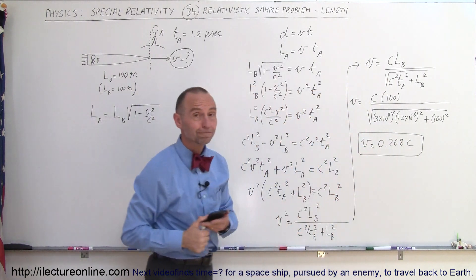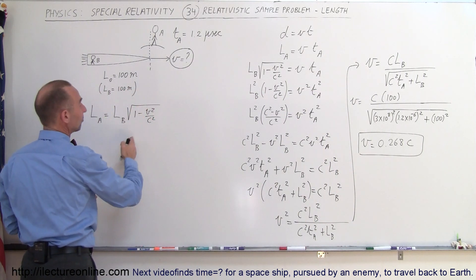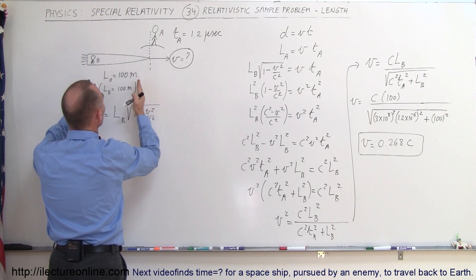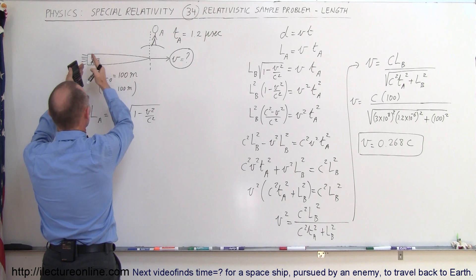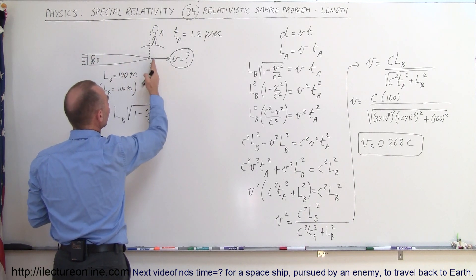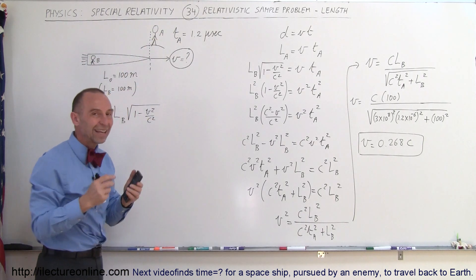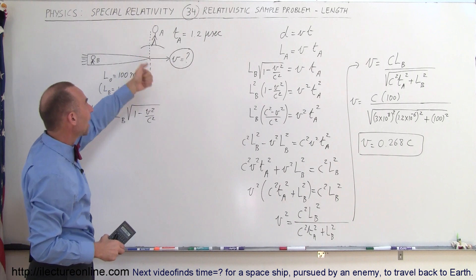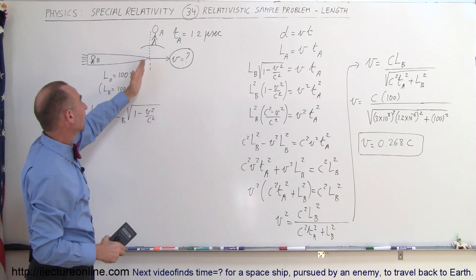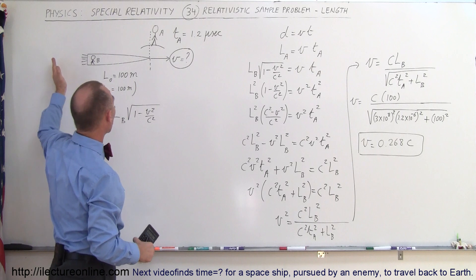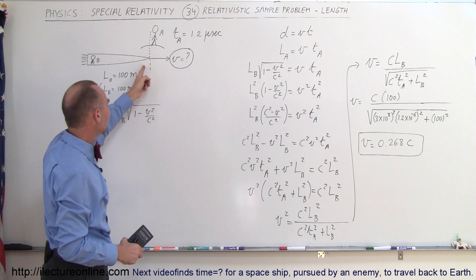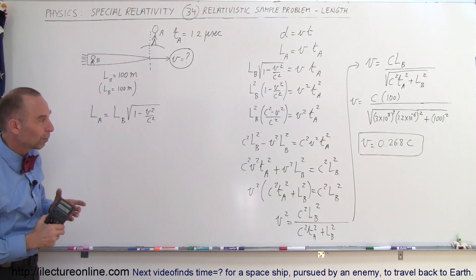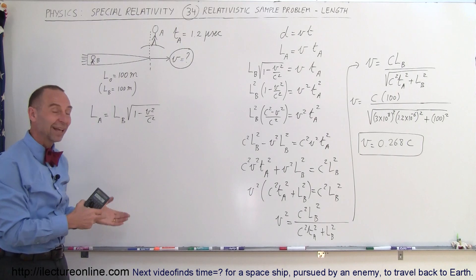So a space rocket flying past the Earth at 0.268 times the speed of light — if it's 100 meters long at rest as seen by an observer on the spaceship — will take 1.2 microseconds to speed past a particular point as timed by a stationary observer on Earth. Based on that information, we can figure out the velocity of the spaceship is 0.268 times the speed of light. And that's how it's done.